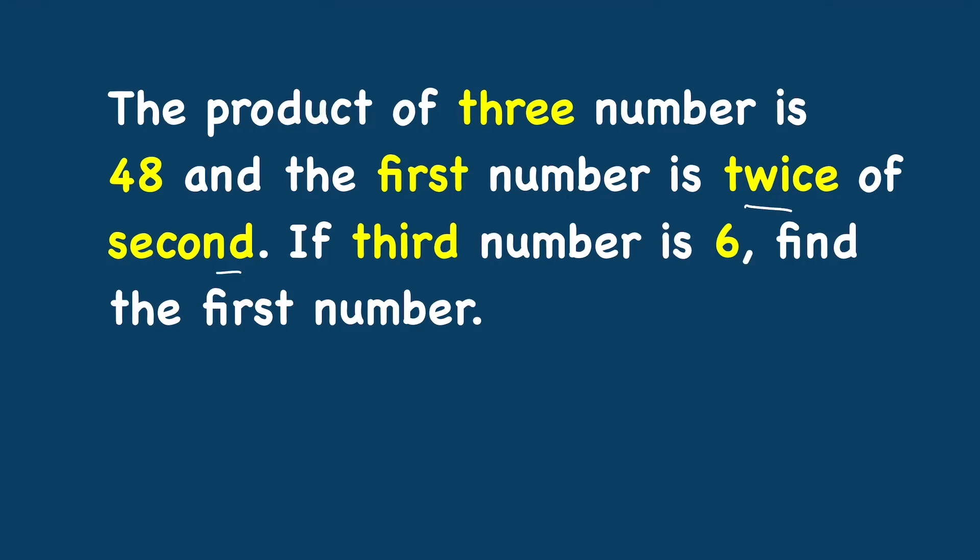The product of three numbers is 48, and the first number is twice the second. If the third number is 6, find the first number. Can you solve it? Pause the video and let me know the answer in the comment section.